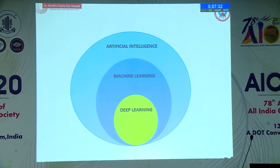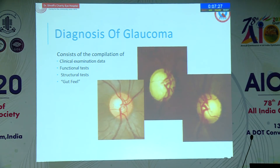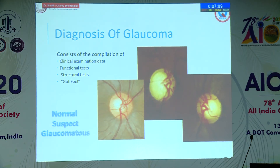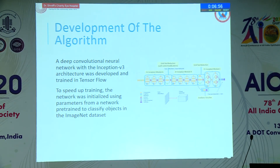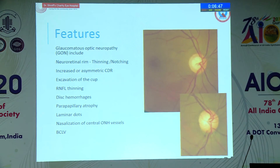Taking it up to the diagnosis of glaucoma: glaucoma is a compilation of clinical examination data, functional data, structural tests, and a gut feel. When we look at any optic nerve head, we arrive at three answers — normal, glaucoma suspect, or glaucomatous optic nerve head. We did a study using deep learning compared against glaucoma specialists. An algorithm was developed based on the Inception V3 architecture and trained in TensorFlow. It was taught features of glaucomatous optic neuropathy including neuroretinal rim, asymmetry of CDR, excavation of the cup, RNFL thinning, disc hemorrhages, peripapillary atrophy, laminar draught, nasalization, and bearing of the circumlinear vessels.